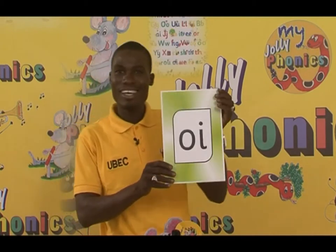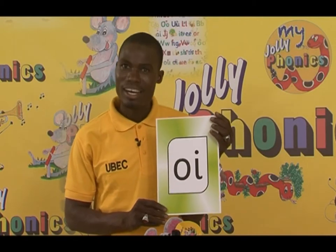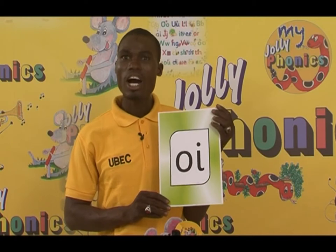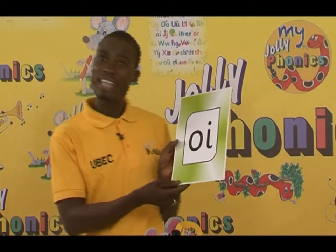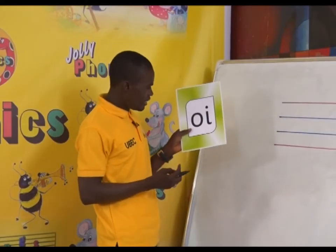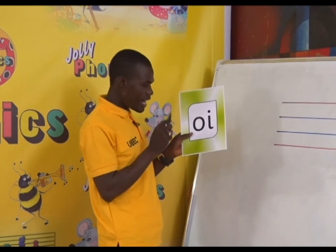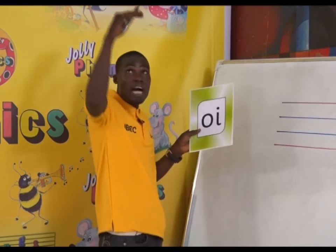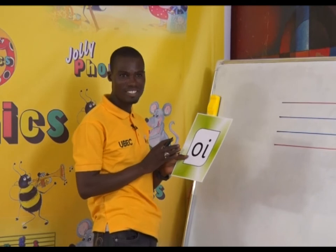So this is the sound we are going to learn today. The sound is Oi! Say it — Oi! Oi! It's also a digraph — remember, it's also a digraph sound. Good! So we are going to write this little sound on the board. Remember, it's a digraph, so we are going to join them together. Is this a giraffe monkey tail or turtle letter sound? Great!